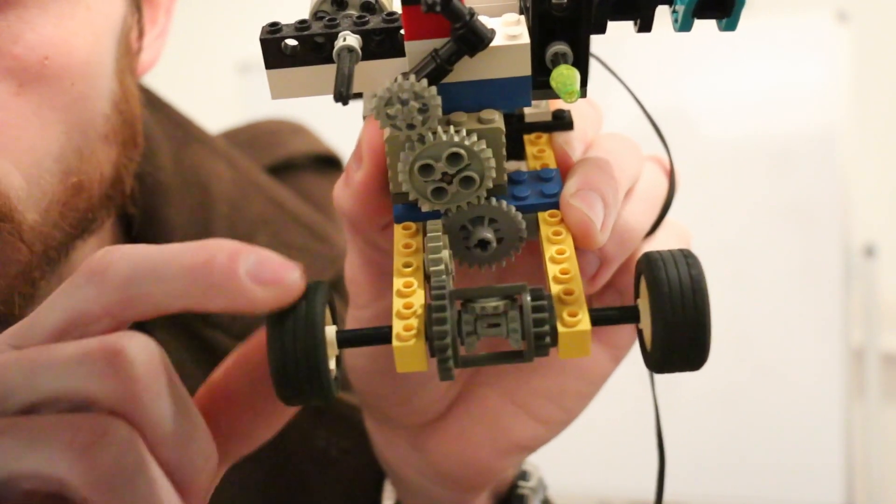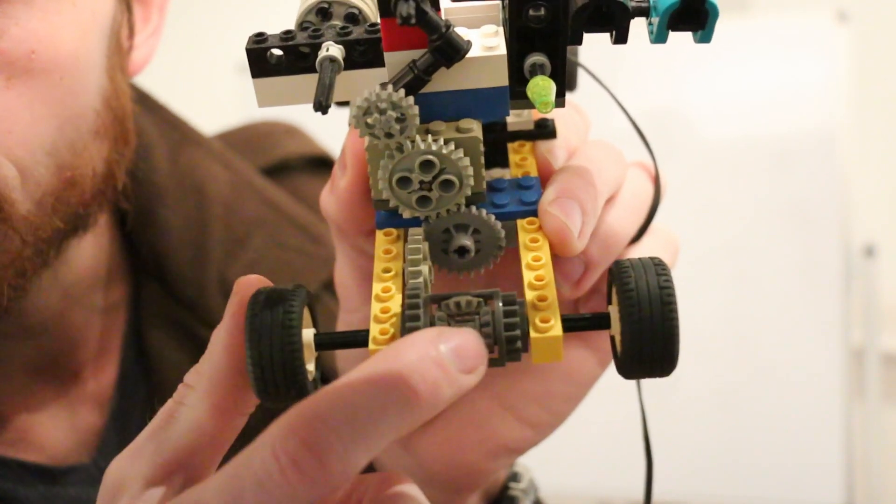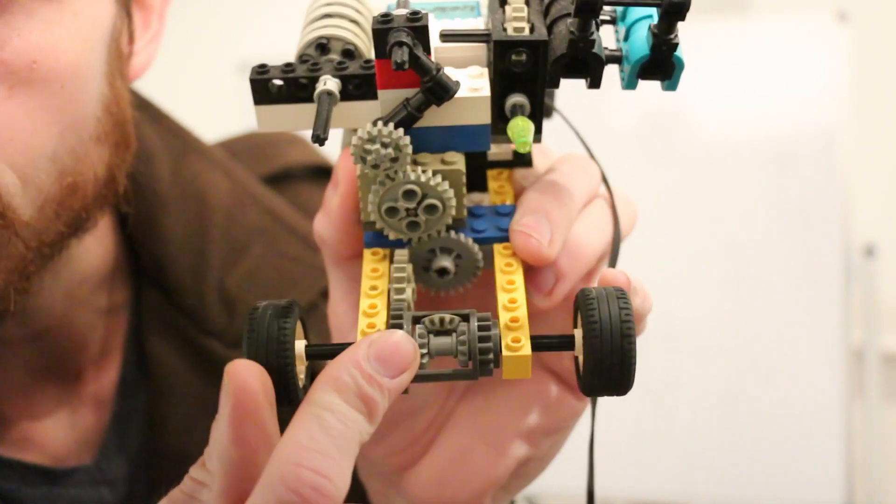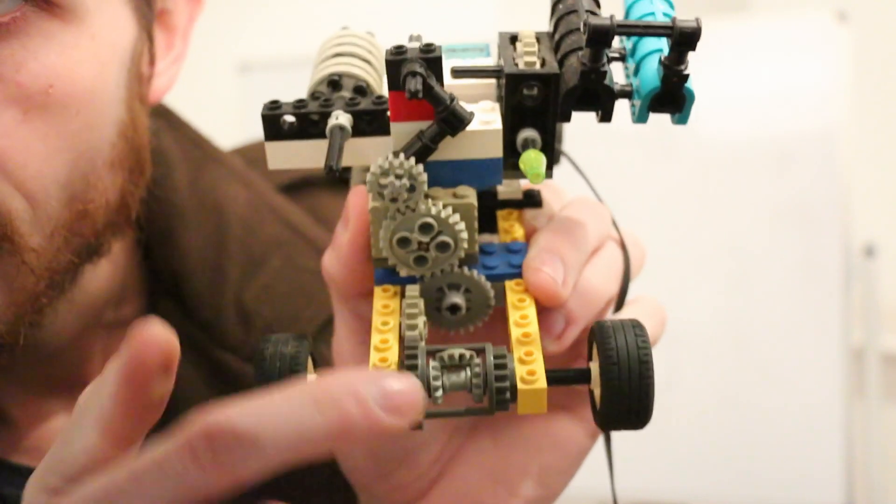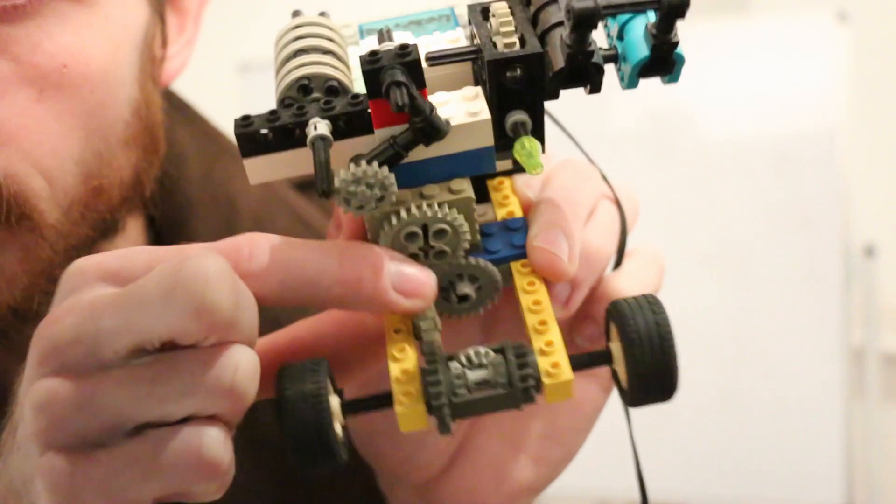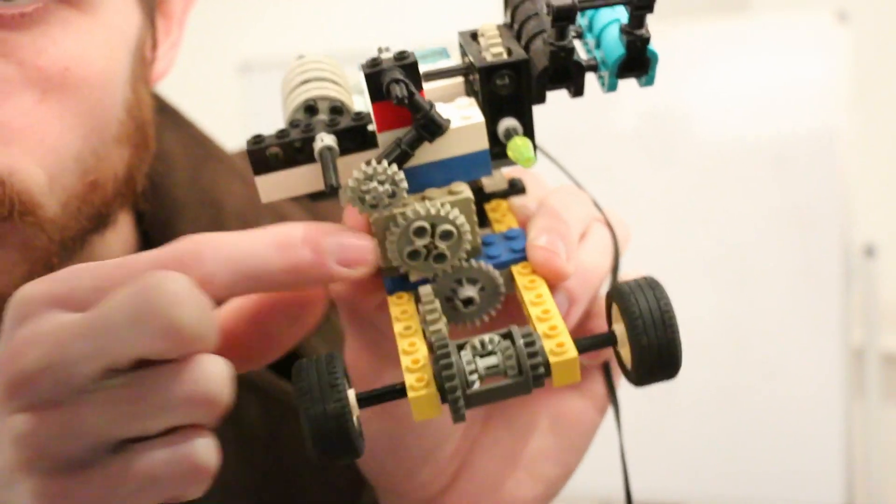If we spin this wheel, you can see that this differential here allows the other wheel here to rotate in the opposite direction. Then you can have a drive coming from here that rotates both of them, and this is known as an open differential.